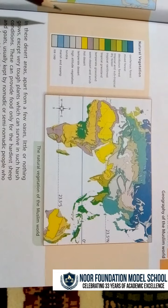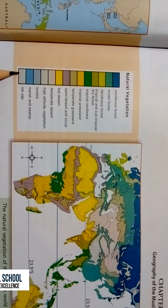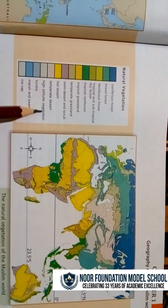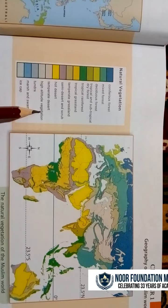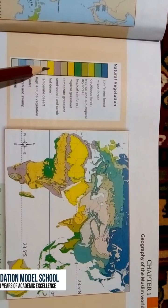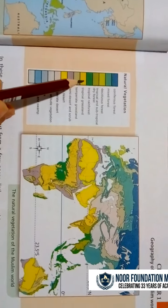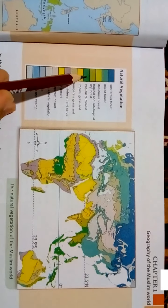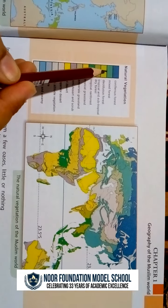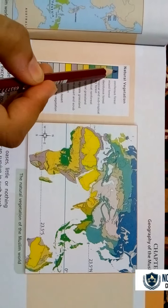The vegetation types shown include forests, agriculture land, deserts, ice caps shown in gray color, tundra, high altitude vegetation, deserts in yellow color, hot deserts, semi-desert areas, temperate grassland, tropical grassland, tropical rainforest, tropical and subtropical dry forest, deciduous forest, mixed forest, and coniferous forests.